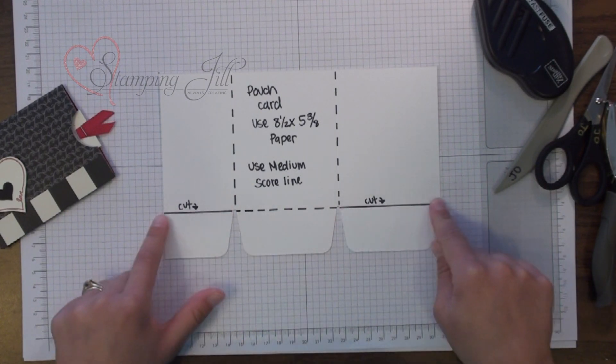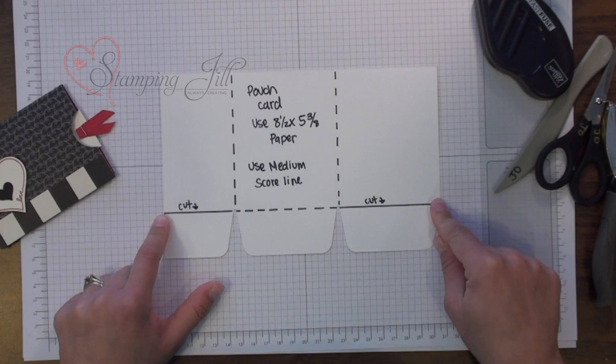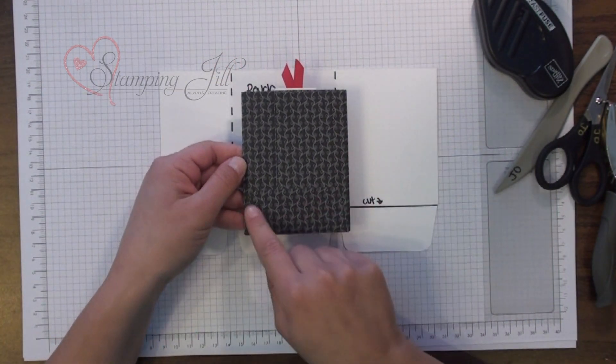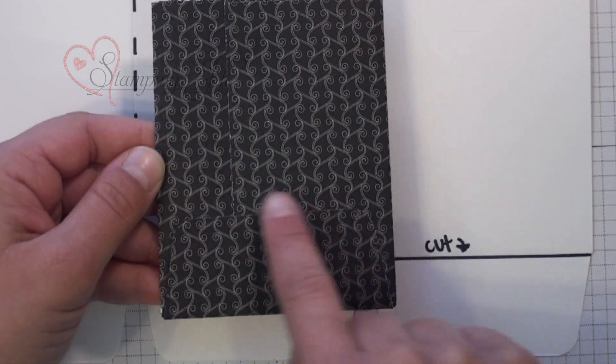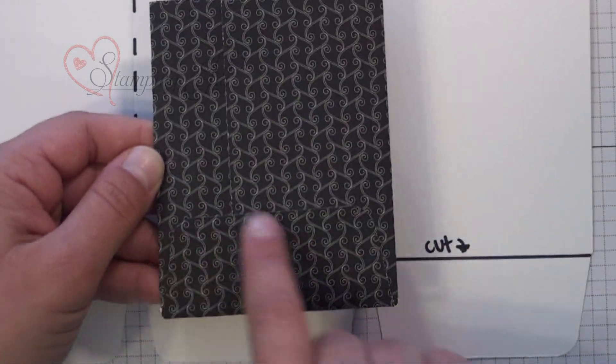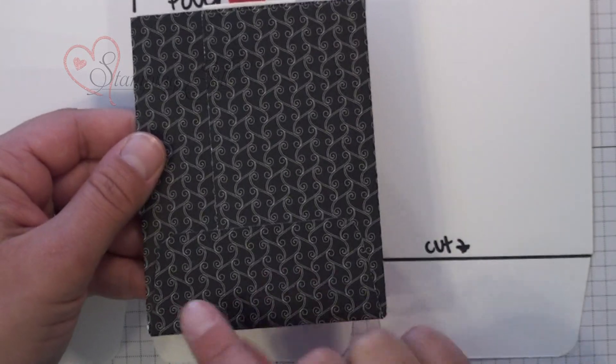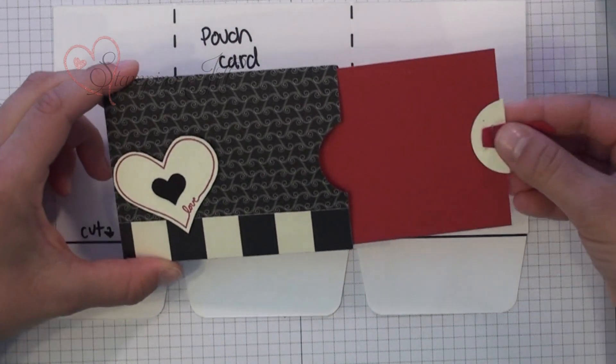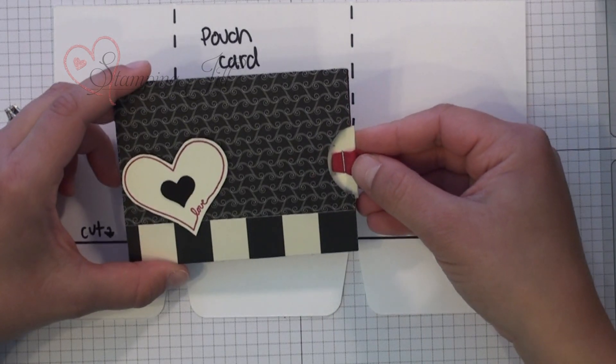And then you'll cut these flaps off and fold it together like this. I'm not sure how easily you can see. But I just adhered these sides together and folded the flap up in the back and it gives you a cute little envelope pouch card.